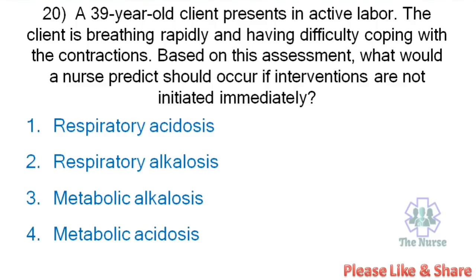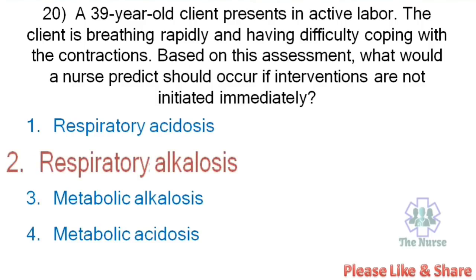Next question: A 39-year-old client presents in active labor, breathing rapidly and having difficulty coping with contractions. Based on this assessment, what would the nurse predict should occur if interventions are not initiated immediately? Options: Respiratory alkalosis, metabolic acidosis. Correct answer: Respiratory alkalosis. Because the client is breathing rapidly, carbon dioxide is removed from the lungs easily, creating a chance to develop respiratory alkalosis.